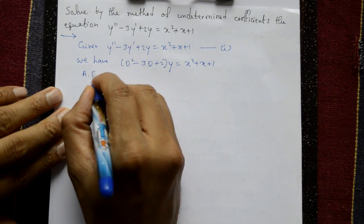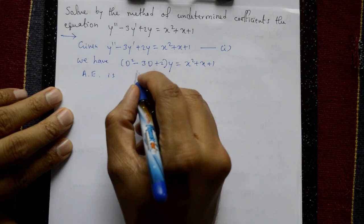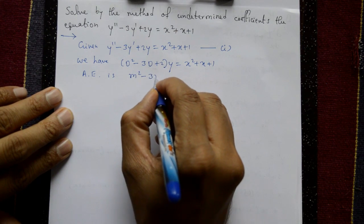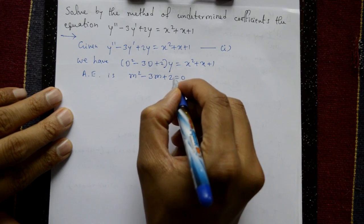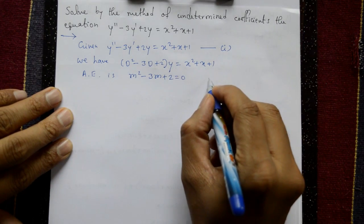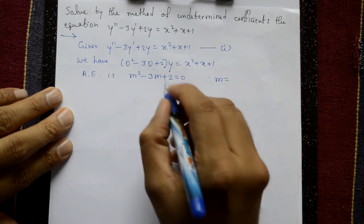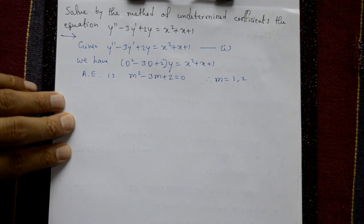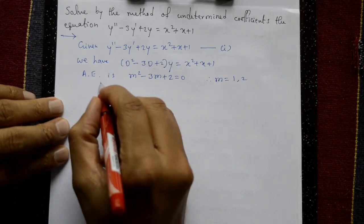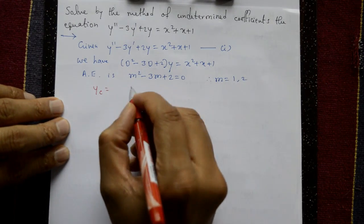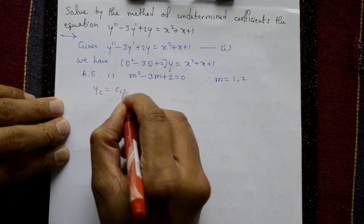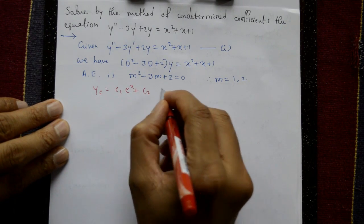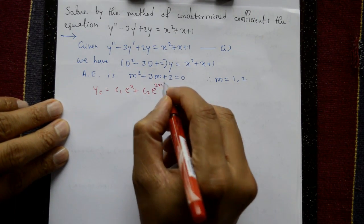The auxiliary equation is m² - 3m + 2 = 0. Using factorization, the roots are m = 1 and m = 2. Since the roots are different, the complementary function is: CF = c₁eˣ + c₂e²ˣ.